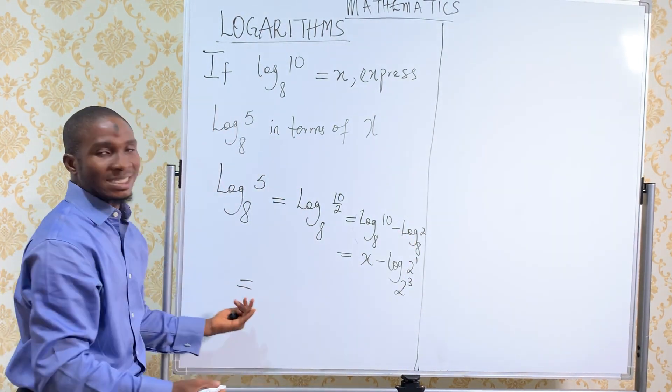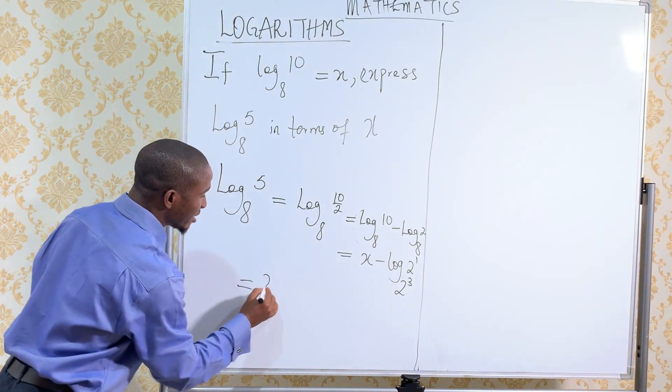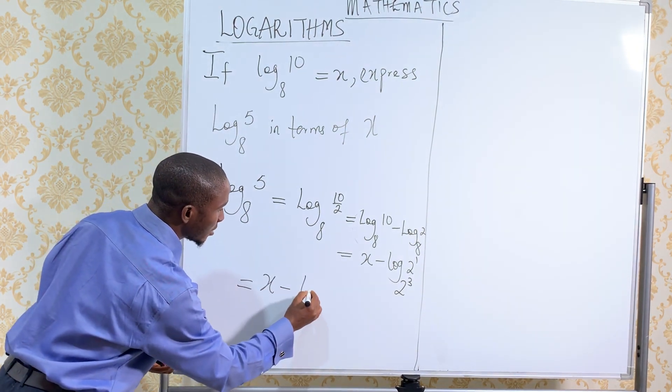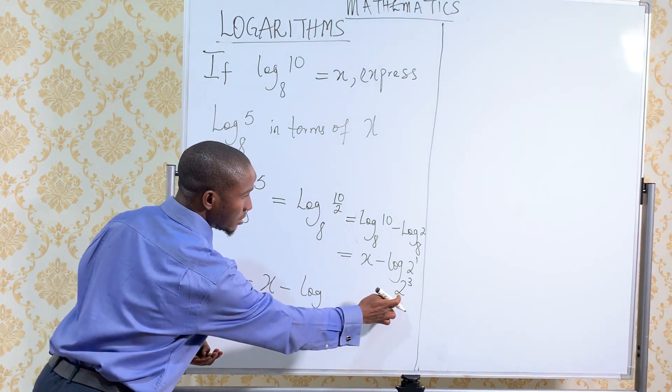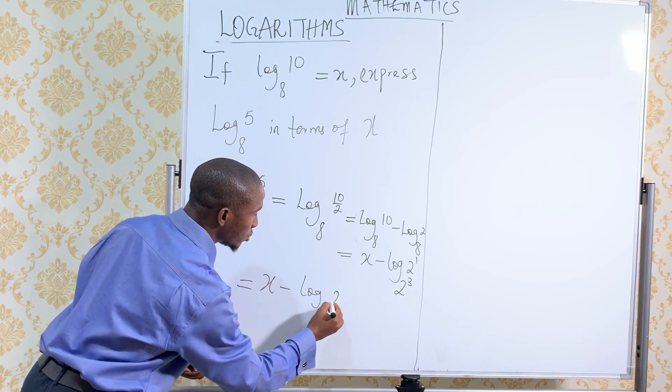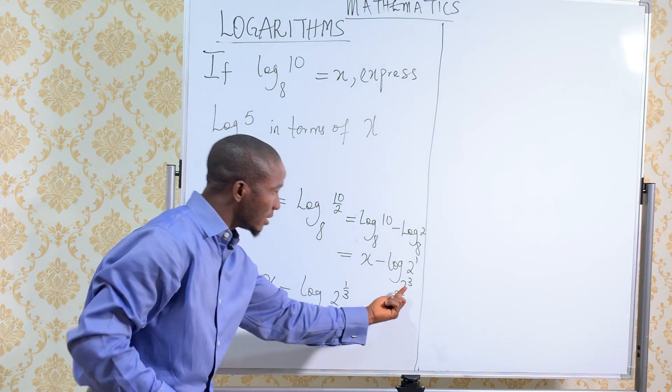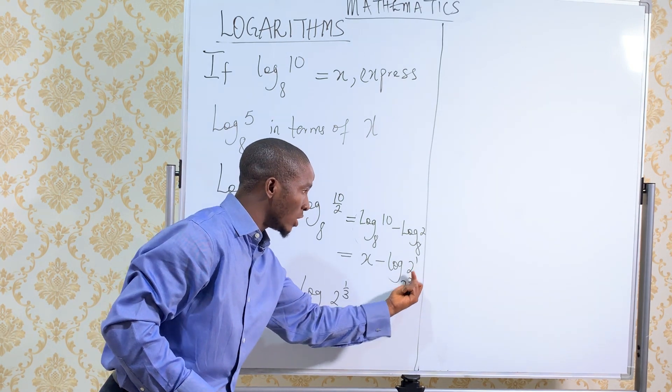We can just continue at this side of the board. We have x minus log 2 to the power 1 over 3. This thing will go up and this will become 1 over 3.